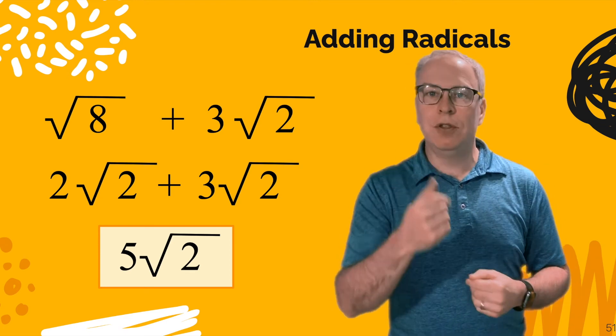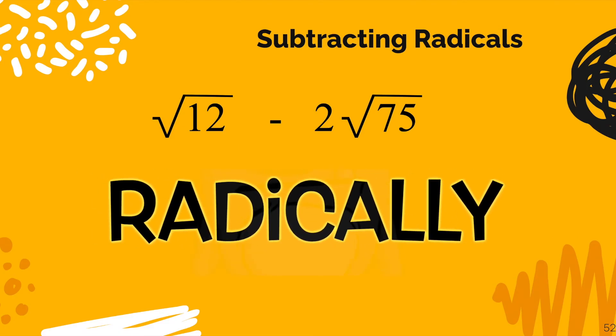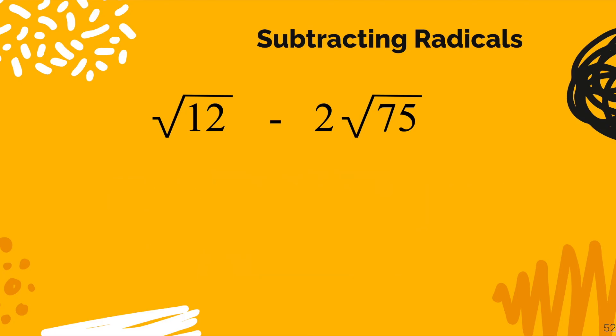Let's give a try on another problem. Let's do one more example. Now these two radicals, bear with me, they look radically different, don't they? We have radical 12 minus 2 radical 75. They seem very different. So let's go ahead and simplify them and see.